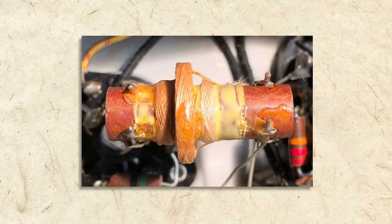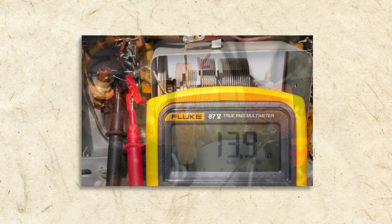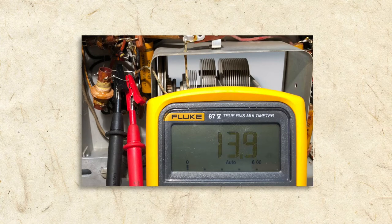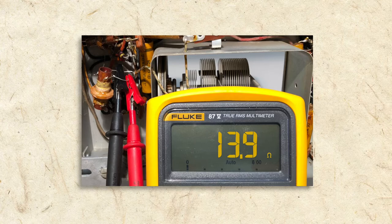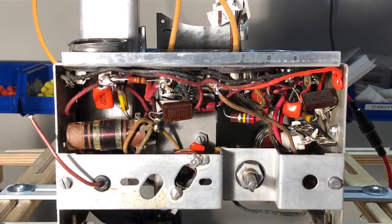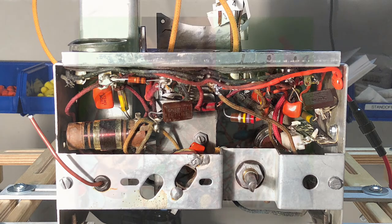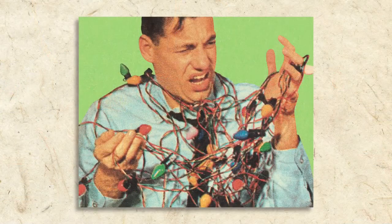Antique radio coils usually work fine, but sometimes the tiny wires can become damaged. Coils are easily tested with a multimeter and should show a measurable resistance. If it tests open or as a short, the coil will require repair. Fortunately, the coils in our radio were all working correctly. It is possible to fix or rewind a broken coil, but it can be a delicate and time-consuming operation.